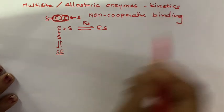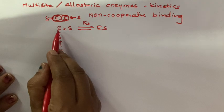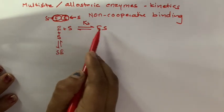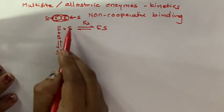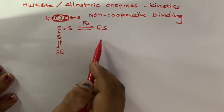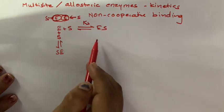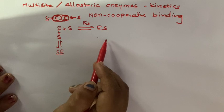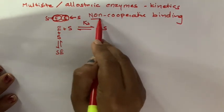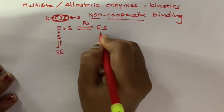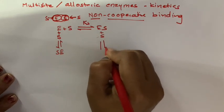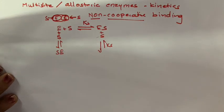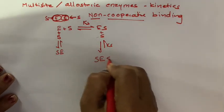Even if the substrate binds to the enzyme, its dissociation constant is not going to vary. It might happen that once one substrate binds, another substrate will have more or less affinity — then we would have a different dissociation constant as alpha Ks. But in this case it is Non-Cooperative.